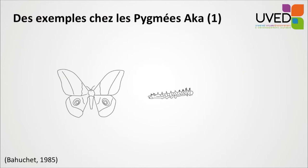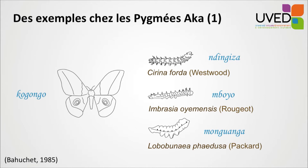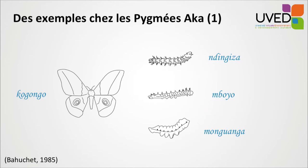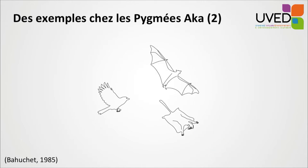In the Aka pygmy population of Central Africa, there are interesting elements regarding vernacular classification. Scientifically, butterfly and caterpillar are classified the same way and belong to the same genera and species — Imbrasia oyemensis. But for Aka pygmies, they have two different classifications: Cogongo and Mboyo. Interestingly, there are different denominations for caterpillars, whereas all butterflies are called Cogongo. Aka pygmies also integrate all edible caterpillars into the same category, and they are all called Cogongo.